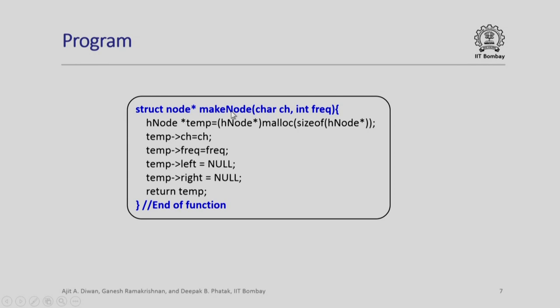Here is a make node struct. H node temp. We are just saying we are creating a temp node by allocating memory. This is the way in which you malloc depending upon the size of H nodes are you allocate memory and create a temporary node.